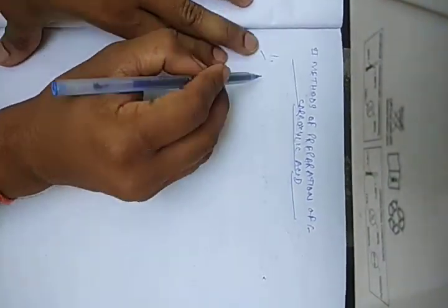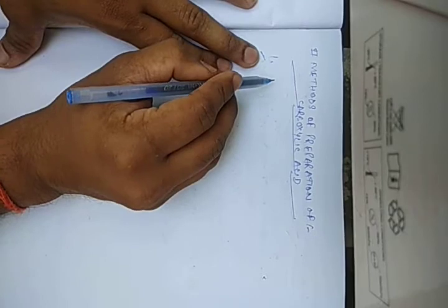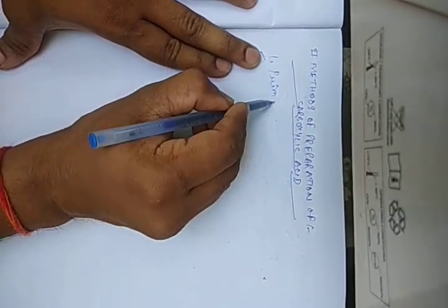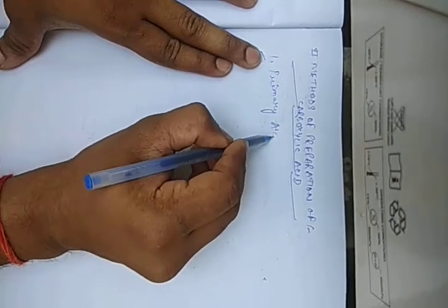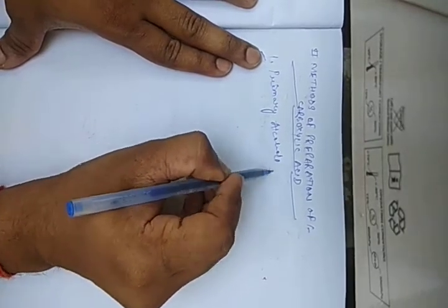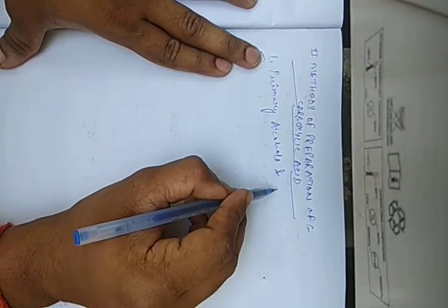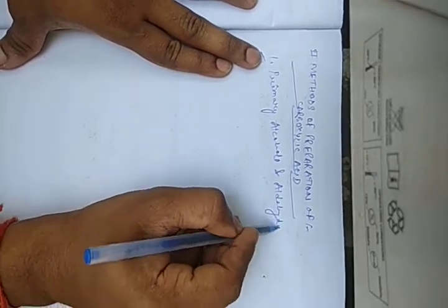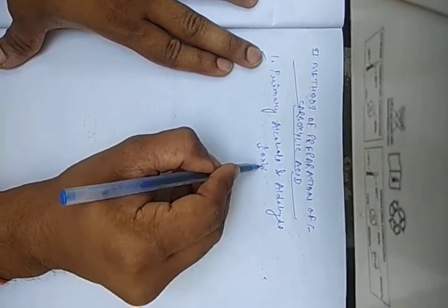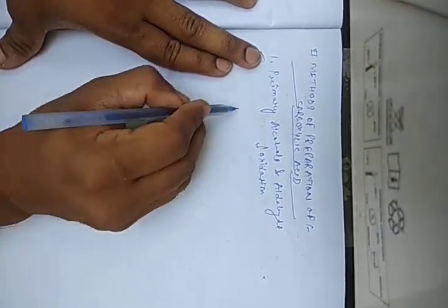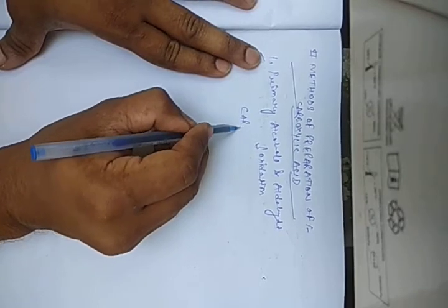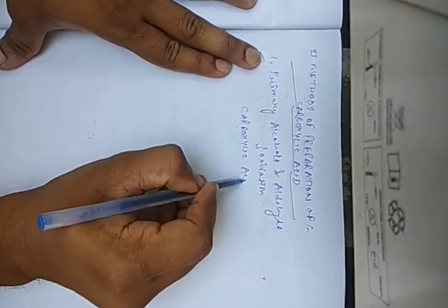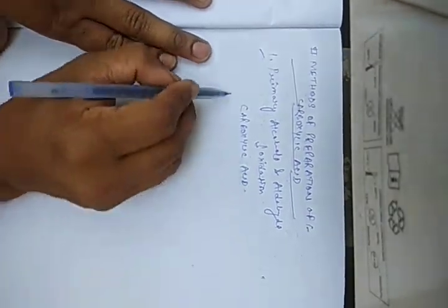First, my dear students, primary alcohol and aldehyde on oxidation always produce carboxylic acid.